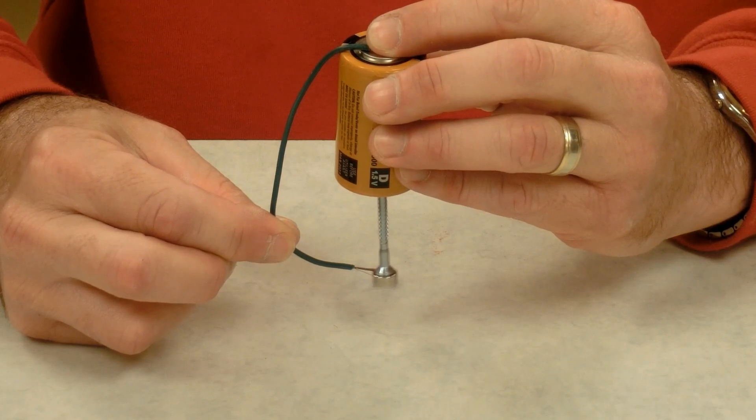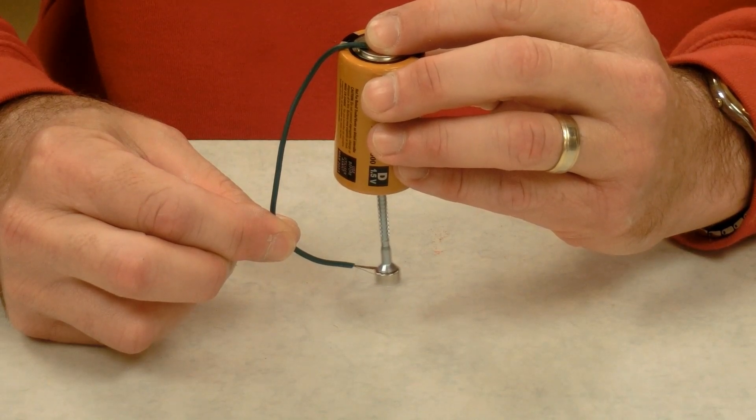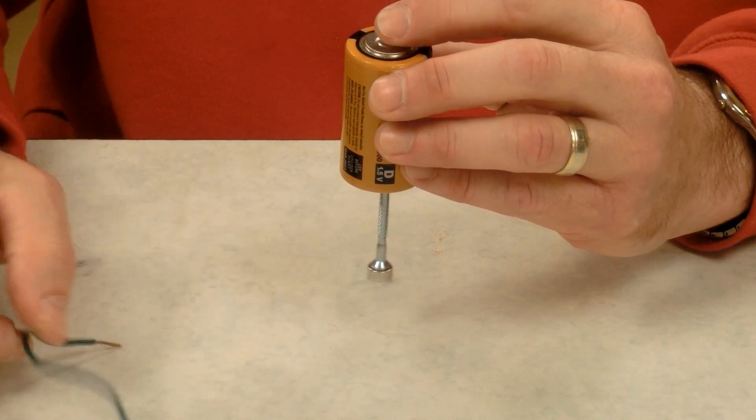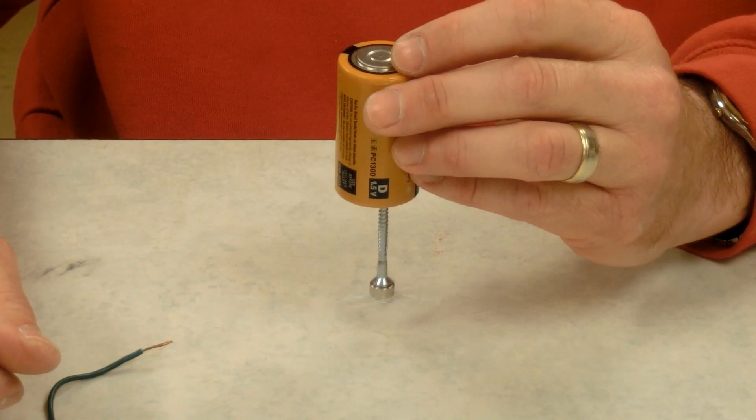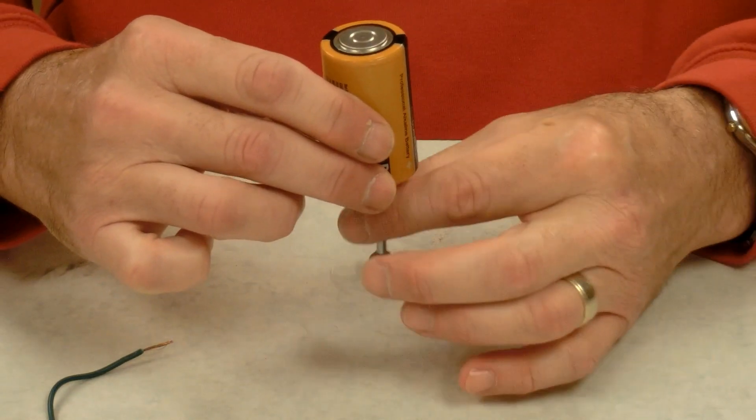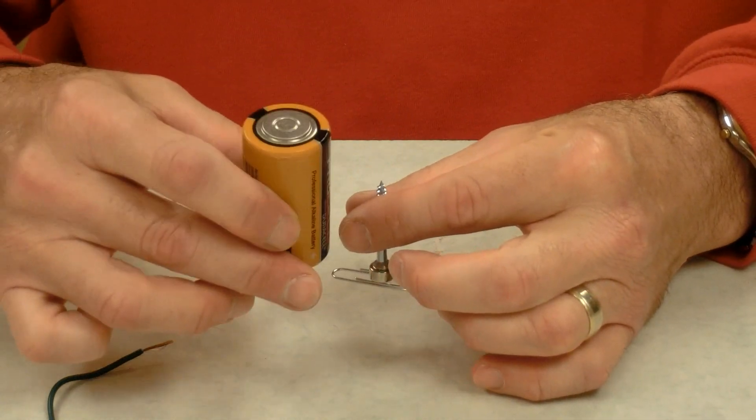Now there are two ways to reverse the direction that this motor spins. One of them is to reverse the direction of current flow.